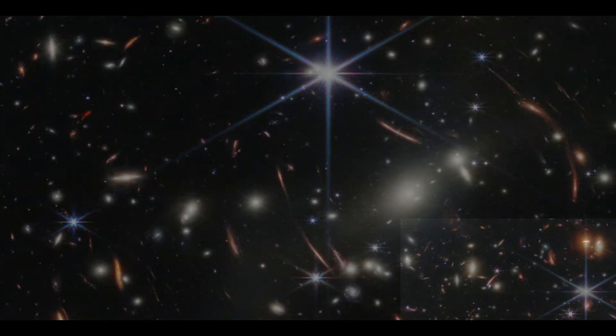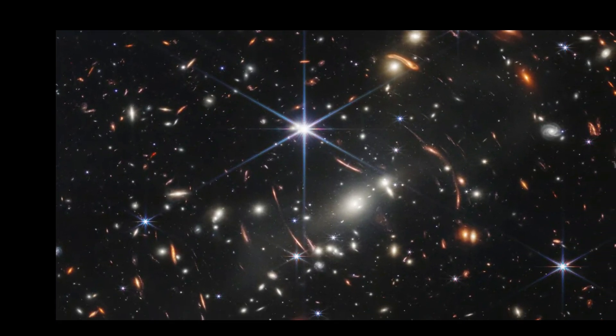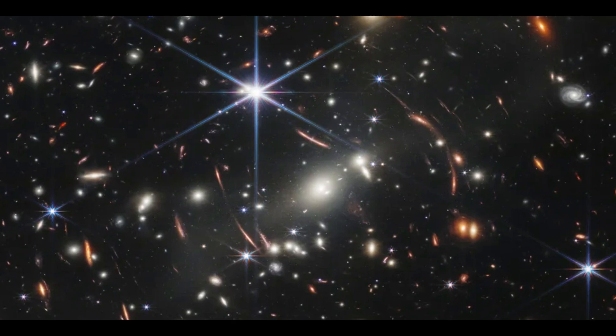Gravitational lensing is an effect created by light bending in the presence of extremely massive objects, such as black holes or, in this case, vast clusters of galaxies.